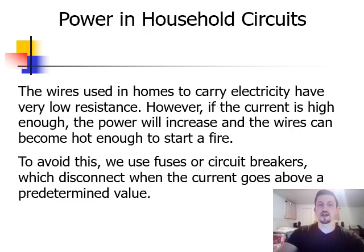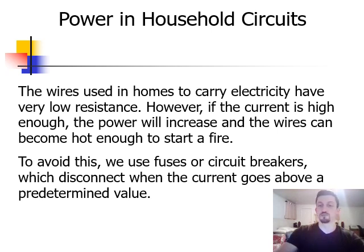When we start looking at household circuits, the wires used in homes to carry electricity have very low resistance. But if the current is high enough, the power is still going to increase, and the wires can become hot enough to start a fire. So obviously we don't want fires starting in our homes. What we do is use either fuses or circuit breakers, which are designed to disconnect the circuit whenever the current goes above a predetermined value. If our wires are getting too hot and we're getting towards the risk of a fire, the fuse or circuit breaker is going to go off, disconnect the circuit, stop the flow of current, and keep us safe.